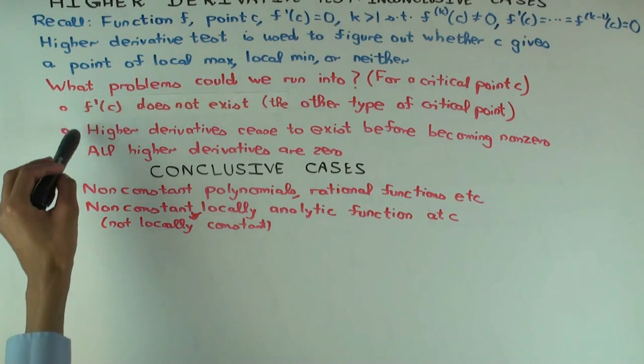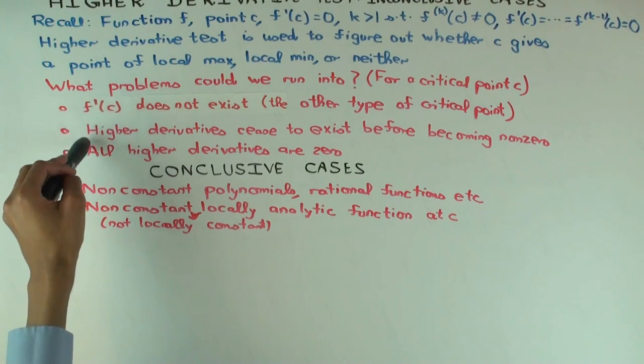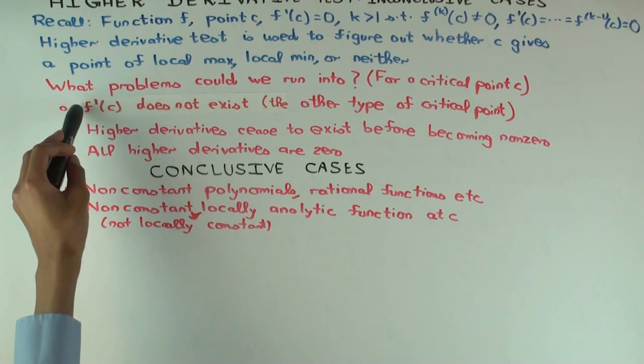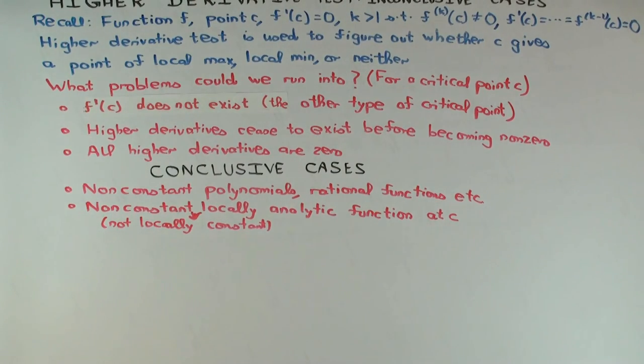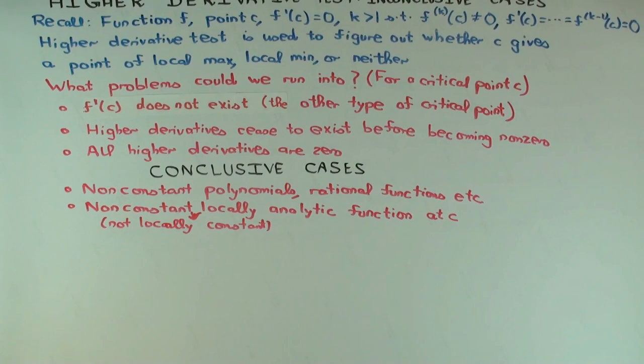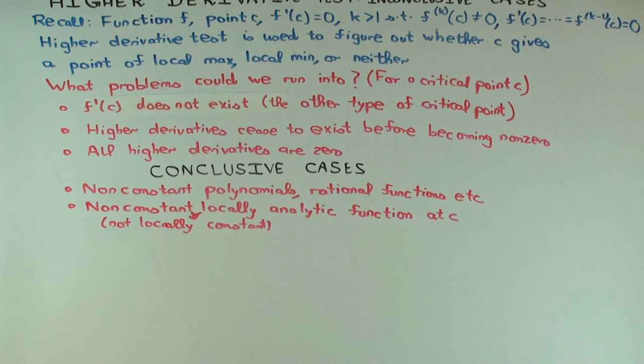Well, actually, for each of these problems, they don't form roadblocks to the first derivative test. So, you can imagine situations for each of these problems where the first derivative test would still work. Because the first derivative test just requires us to have f prime on the left and right. It doesn't require us to have f prime at the point. It doesn't require anything about high derivatives at the point.